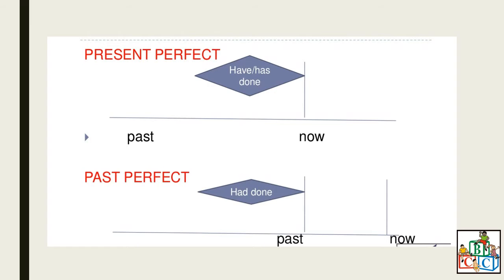Let us do a small revision now. We are going to revise the present perfect and the past perfect tense to see if you still remember these verb tenses. For the present perfect, you will be using 'have' or 'has' plus the verb in past participle. For the past perfect, you will be using only 'had' — for I, you, he, she, it, we, they — had plus the verb in past participle. Let us move on.